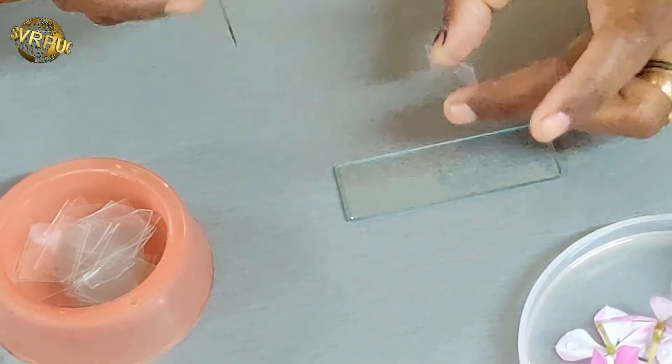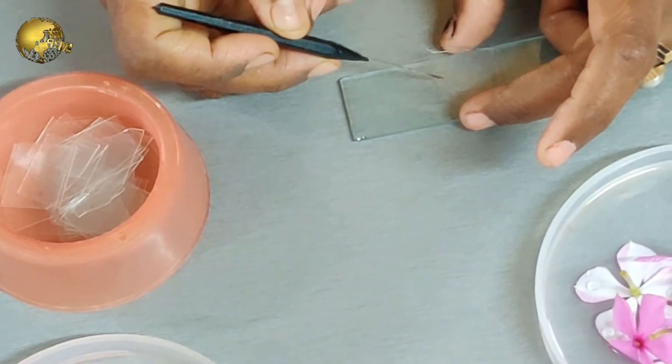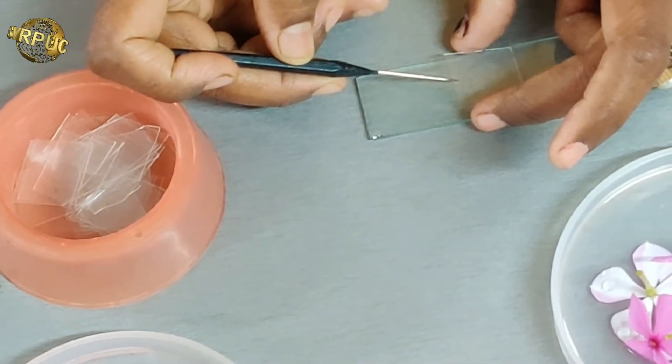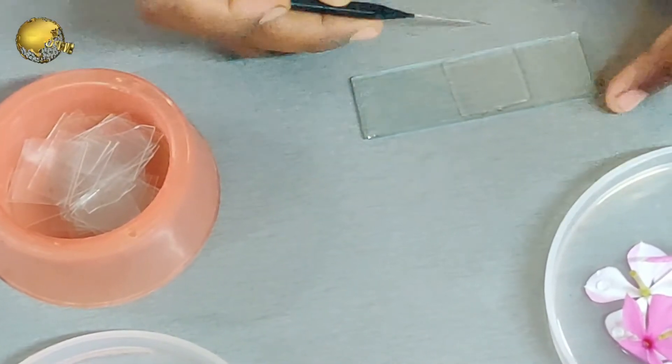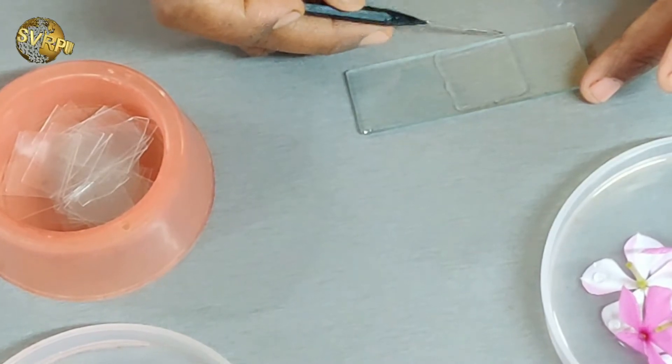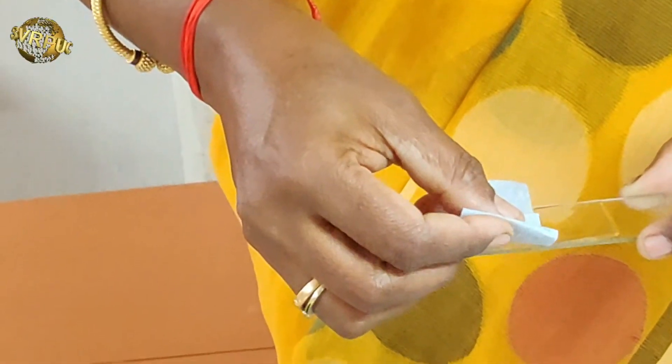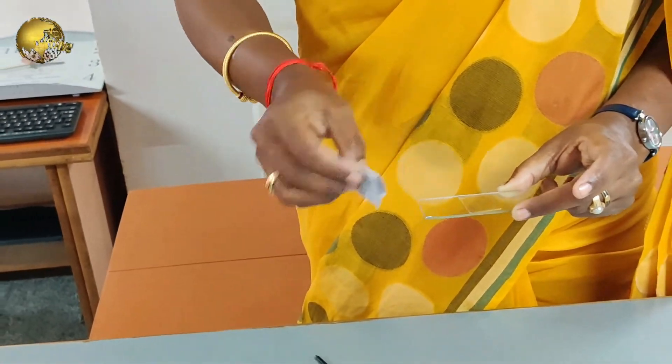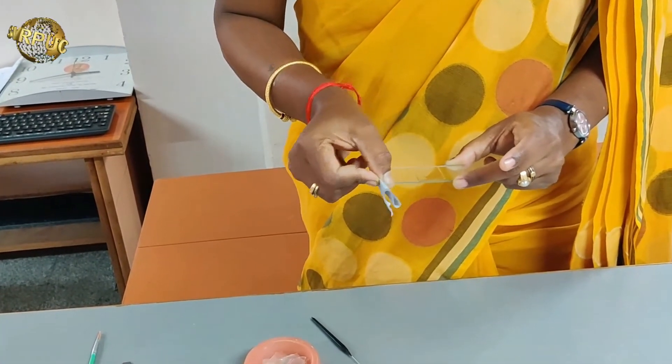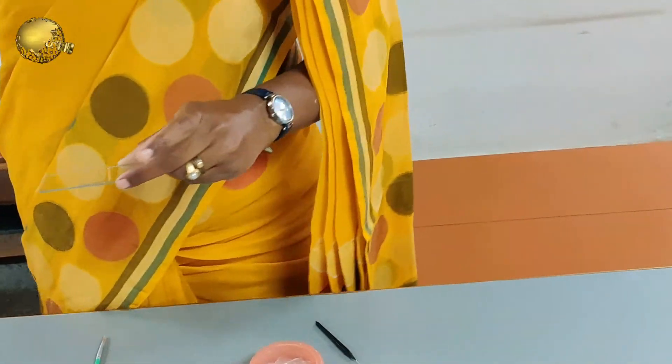Take the cover slip. Lower down the cover slip. Remove the excess. Focus on the microscope.